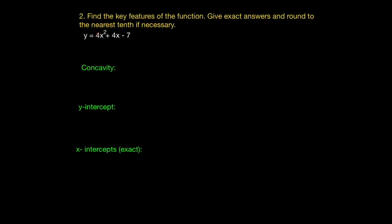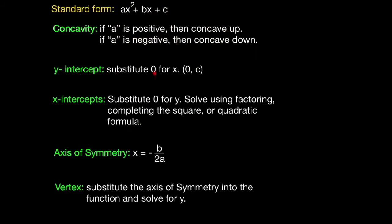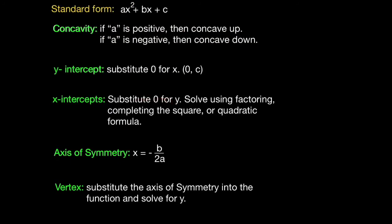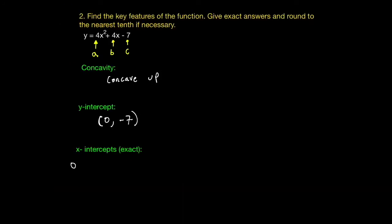Here the a value is positive 4, so we have concave up. Now for the y-intercept, we have to substitute 0 for x. And for the x-intercepts, I have to solve either using the quadratic formula, completing the square, or by factoring. So here we have 0 equal to 4x squared plus 4x minus 7, and my choice is going to be to use the quadratic formula.